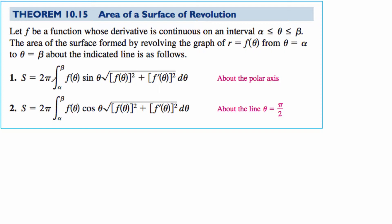Then that surface area is going to be 2π, the integral from alpha to beta, of f(θ) sin(θ) times the square root of [f(θ)]² plus [f'(θ)]² dθ. So you should be recognizing parts of this equation.